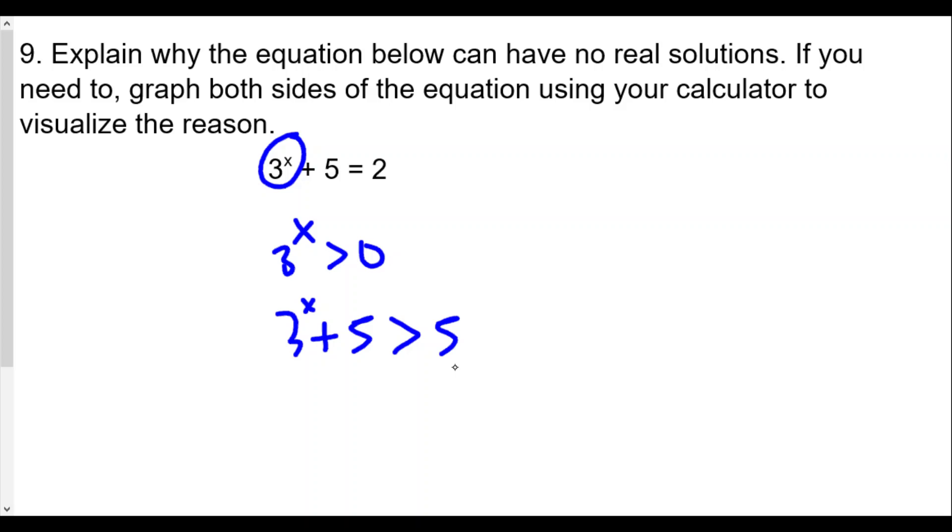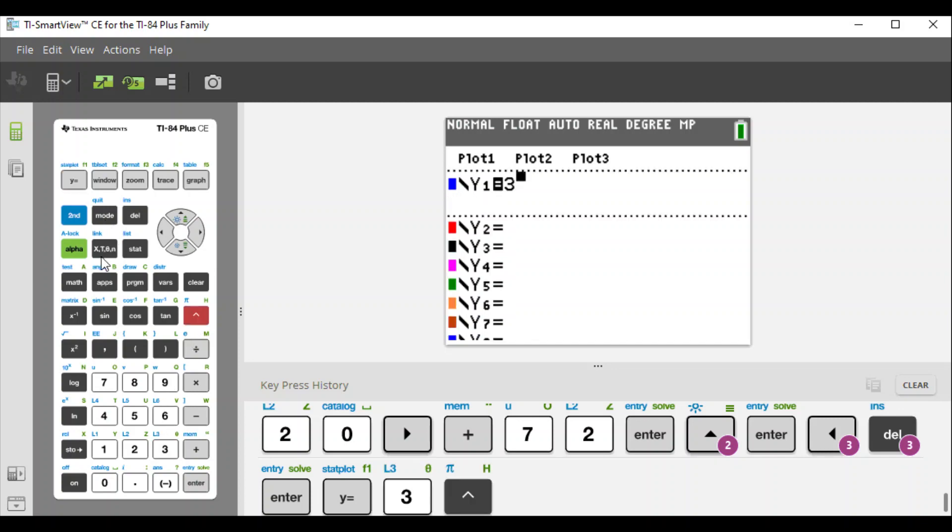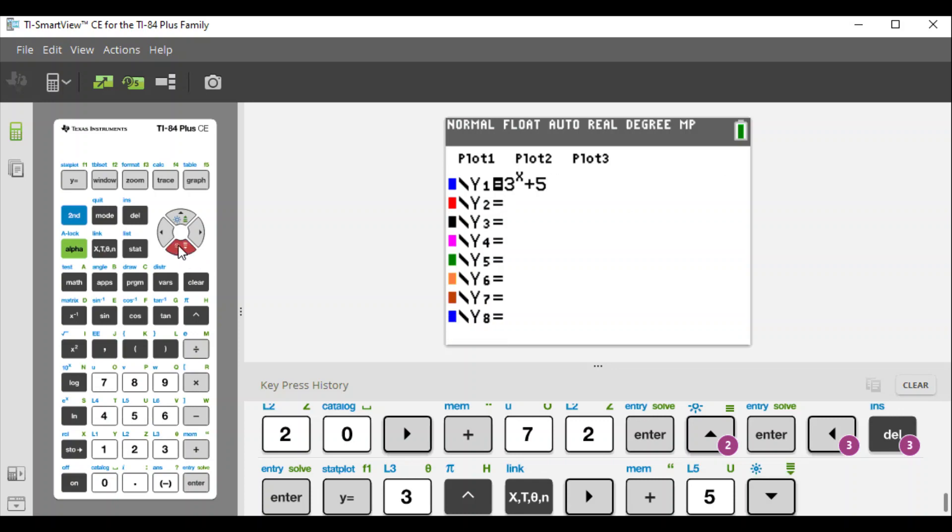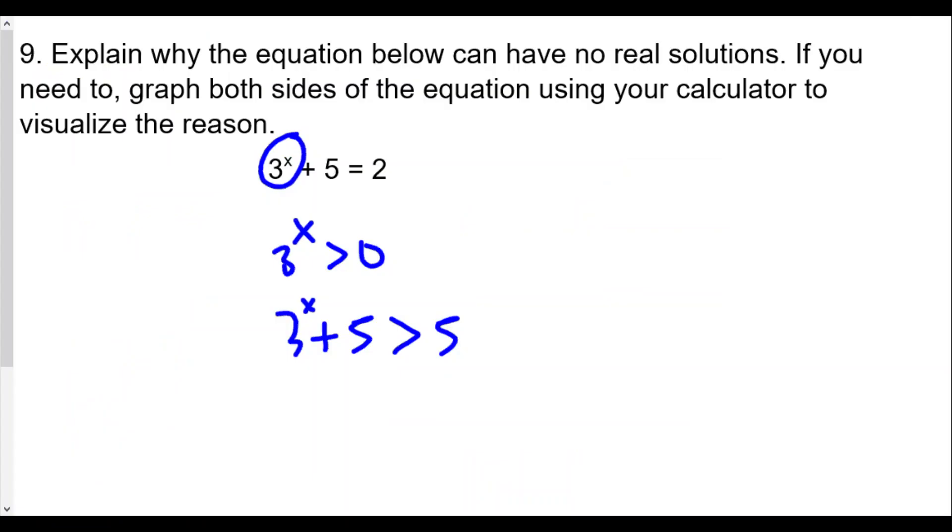Why? Because 3 to the x can be a very small tiny value, but it will always be greater than zero. You take any positive number raised to any power, it must be greater than zero. To show this graphically, let's go to y equals. We're going to have 3 raised to the x and then plus 5, and then y2 will be just 2. We're going to hit zoom standard, zoom 6. We'll see that the blue graph will never intersect - it'll just flatten out at a value of 5 but never cross that, keep increasing, while y equals 2 is just always below the 3^x plus 5.